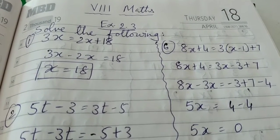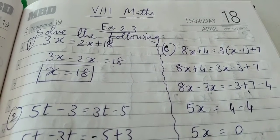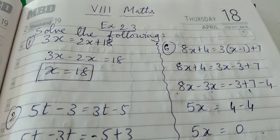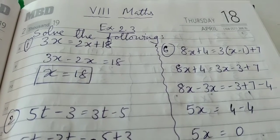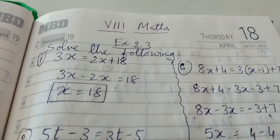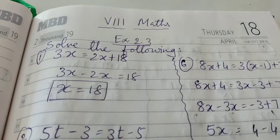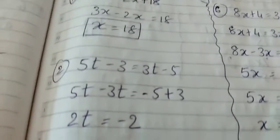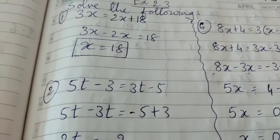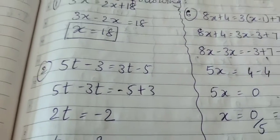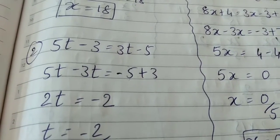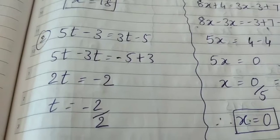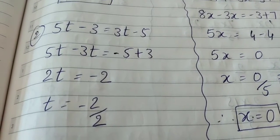The first sum, 3x is equal to 2x plus 18. So the like terms you bring together, 3x minus 2x is equal to 18. 3 minus 2 is 1, so x is equal to 18. After solving two exercises or after going through exercise 2.1 and 2.2, I don't think there will be any difficulty in understanding these solutions.